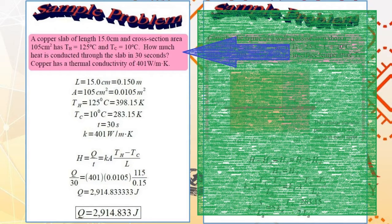Moving on to the next problem. You have a copper slab of length 15 centimeters and a cross-section area of 105 centimeter squared. One side has temperature TH is equal to 125 degrees Celsius and the other end has a temperature Tc is equal to 10 degrees Celsius. Heat will then flow from higher temperature to colder temperature, to lower temperature. So, heat will flow from TH to Tc. How much heat is conducted through the slab in 30 seconds.